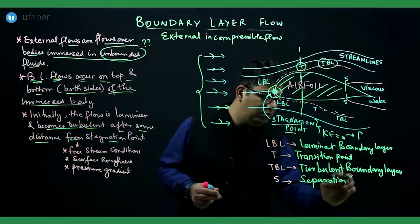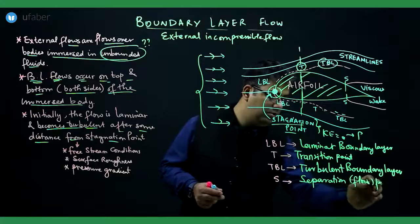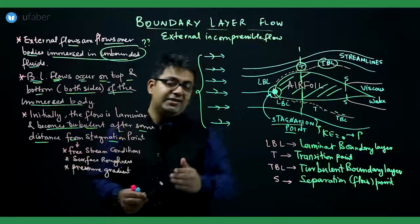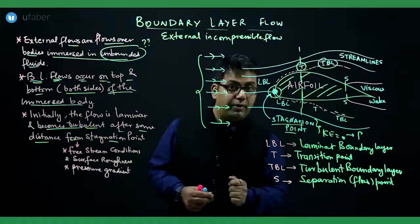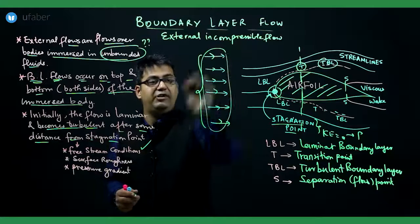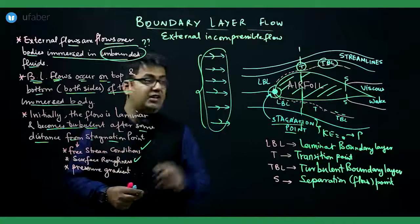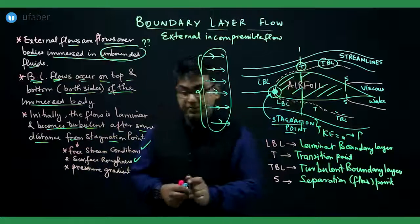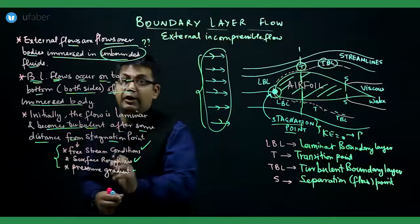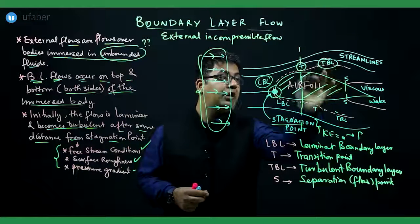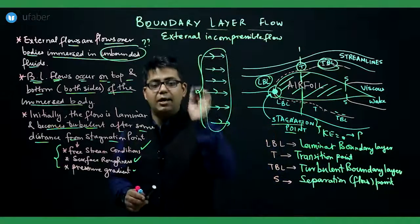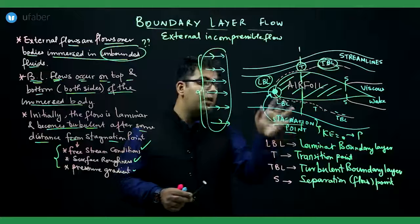How far the transition point is from the stagnation point depends on three parameters: the free stream conditions, the surface roughness of the body, and the pressure gradient. These three factors determine when the transition from laminar to turbulent flow occurs. This concludes the basic introduction to boundary layer flow as an external incompressible flow.